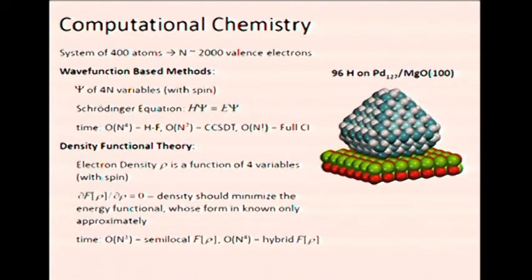For example, it's hydrogen absorbed on palladium nanoparticles supported on MgO. To calculate chemical properties of the system, we need to account for the quantum effects. We can either try to calculate the wave function. For this model of around 400 atoms, which has around 2,000 valence electrons, the wave function will have around 8,000 variables, which is pretty complicated.